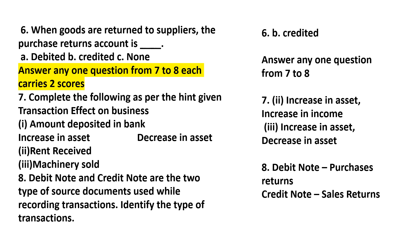Complete the following as per the hint given — transaction effect on the business. When an amount is deposited into the bank, bank asset increases and cash asset decreases. For rent received, the cash asset increases and income increases.